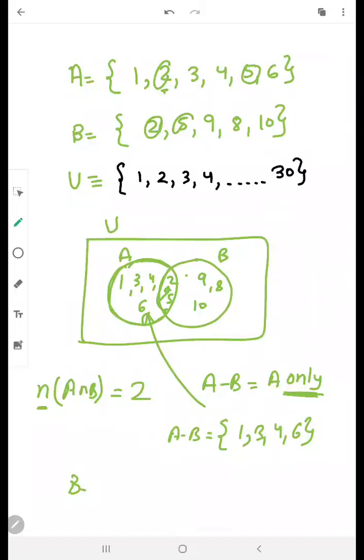And if I am saying B minus A, B minus A will have the elements 9, 8 and 10. Remove all the other elements if B is in common with some other set. So this is your B minus A.